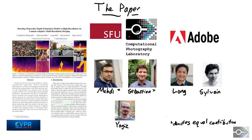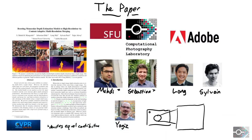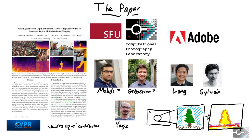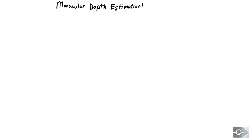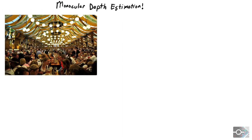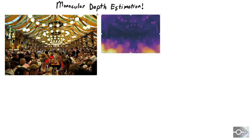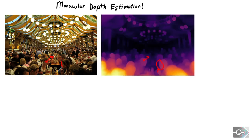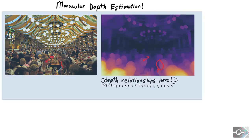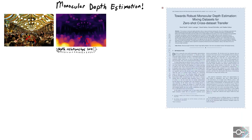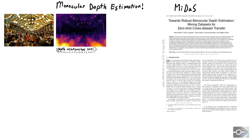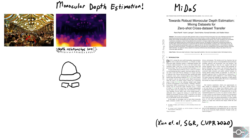Before we get into the details, let's look at how depth estimation networks behave. Monocular depth estimation uses contextual cues such as occlusions or the relative sizes of objects to estimate the structure of the scene. We will use a pre-trained MIDAS network by Ranftl et al., but our analysis with the SGR network by Sien and colleagues also supports our claims.